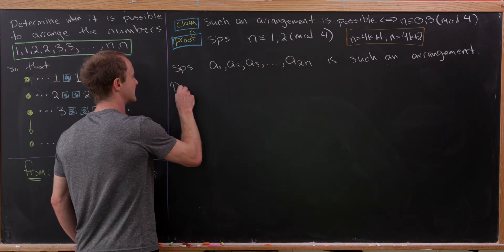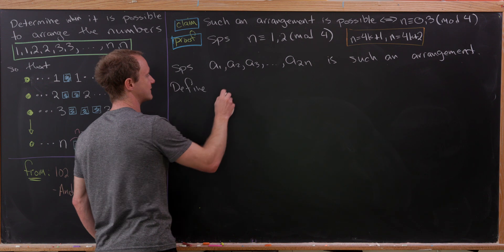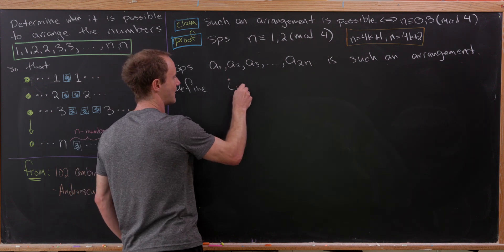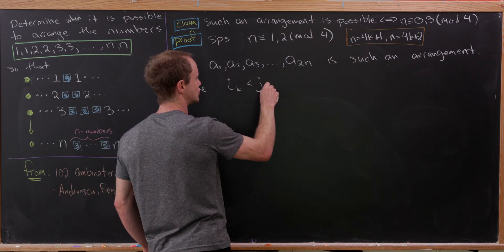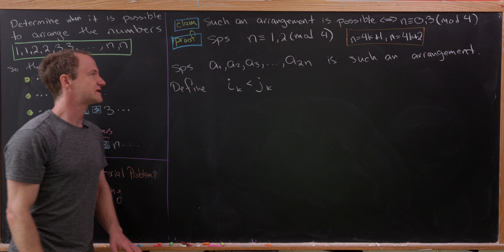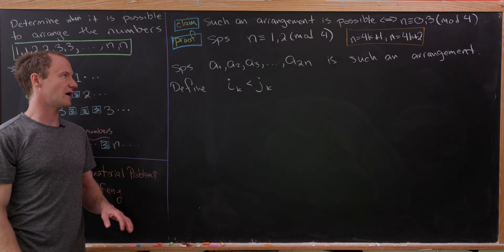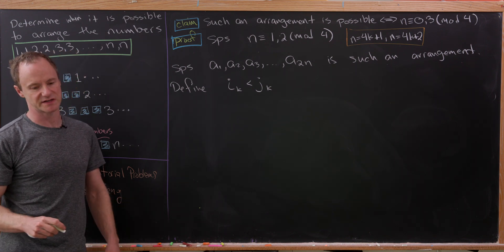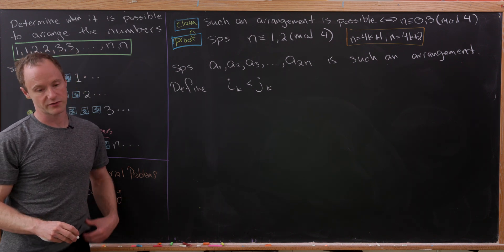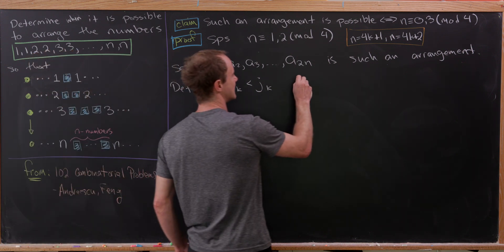Let's suppose that A1, A2, A3, all the way up to A2N is such an arrangement. When I say such an arrangement, I mean it's an arrangement satisfying our rules. And then next up, we want to define two sequences of numbers. I'm going to call them I sub K and J sub K. They're really subsequences or reorderings of the sequences 1 through N.